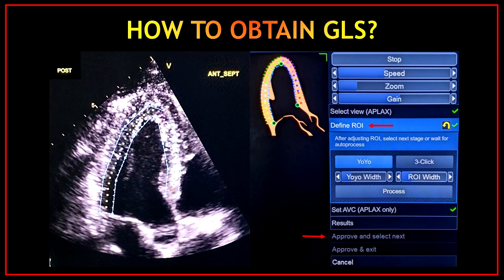Now that you have selected the view, the next step is to define the region of interest. Once again, the artificial intelligence will automatically track the left ventricular wall and the segments for you. If you think this tracking is accurate and you are happy with it, you can just click approve and select next. If you are not happy and the tracking is not accurate, don't worry — you can do this manually by clicking the three-click button.